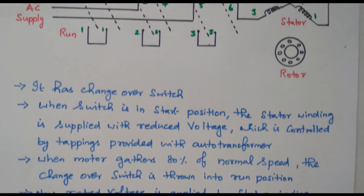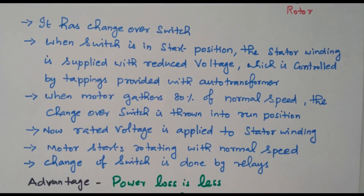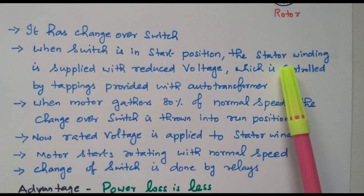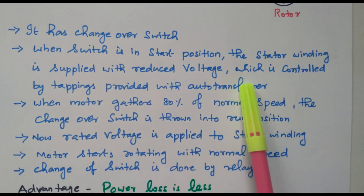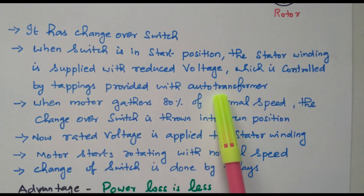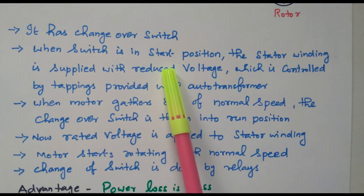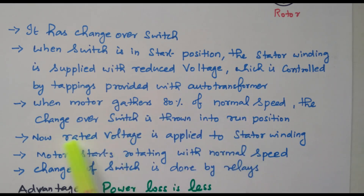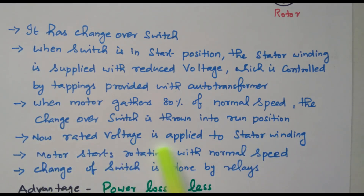Now we will see the description. There is a changeover switch. When switched to the start position, the stator winding is applied with a reduced voltage, which is controlled by the tapping provided in the auto-transformer. When the motor gathers 80% of normal speed, the changeover switch is thrown into the run position, meaning the entire voltage is applied. Now the rated voltage is applied to the stator winding and the motor rotates at normal speed. The changeover switch operation is done by a relay.